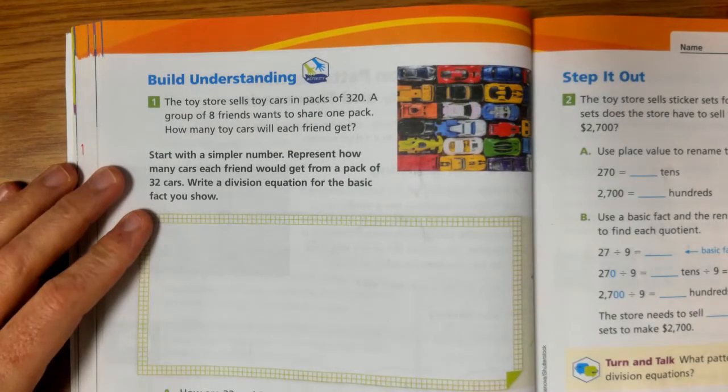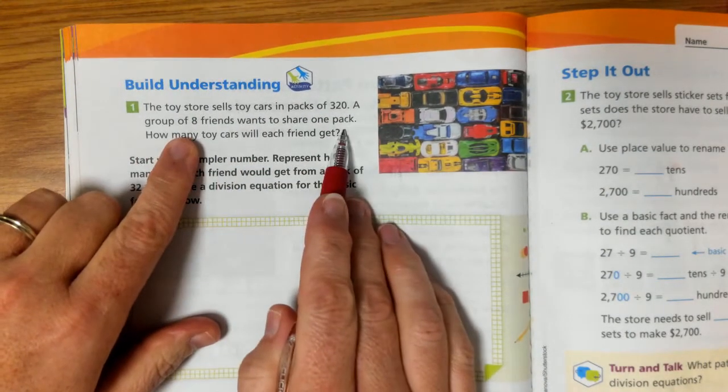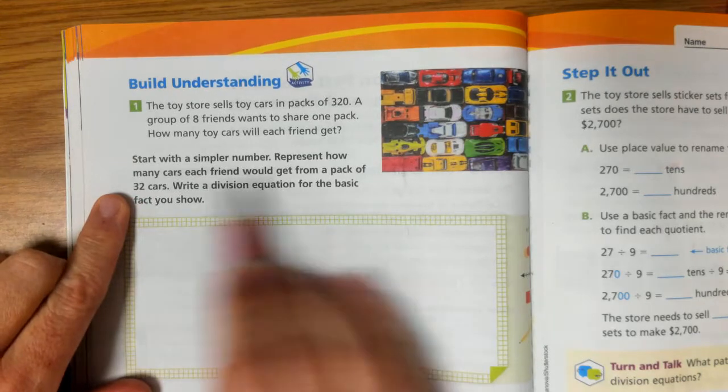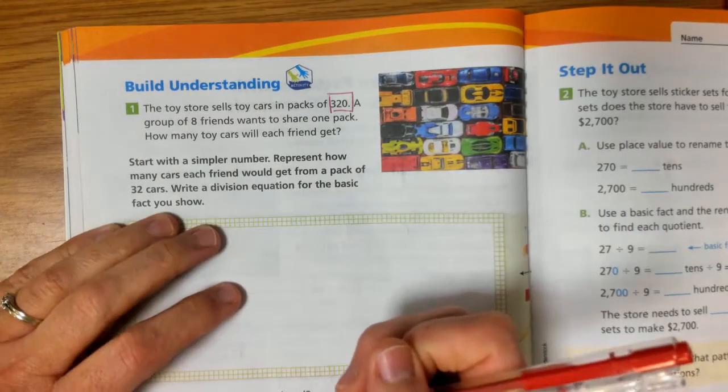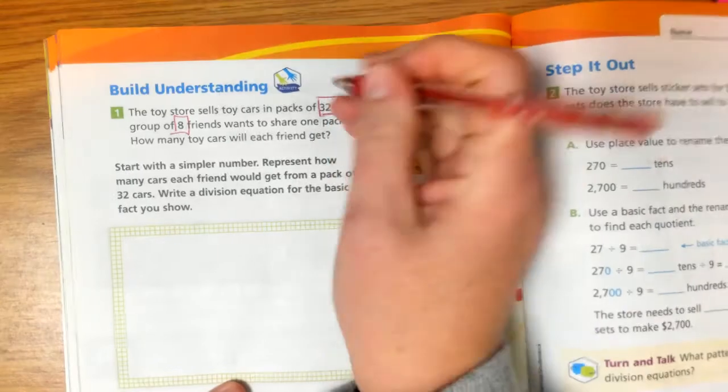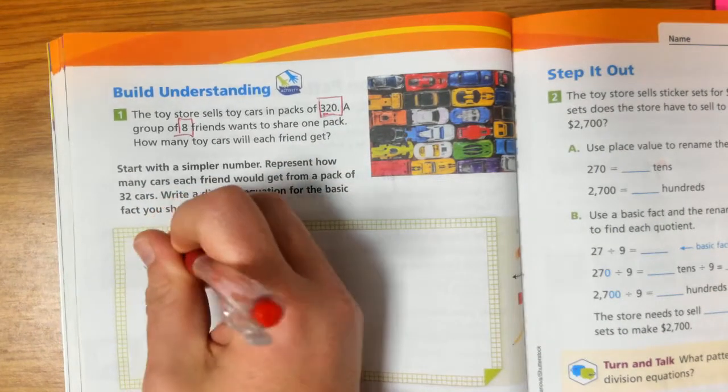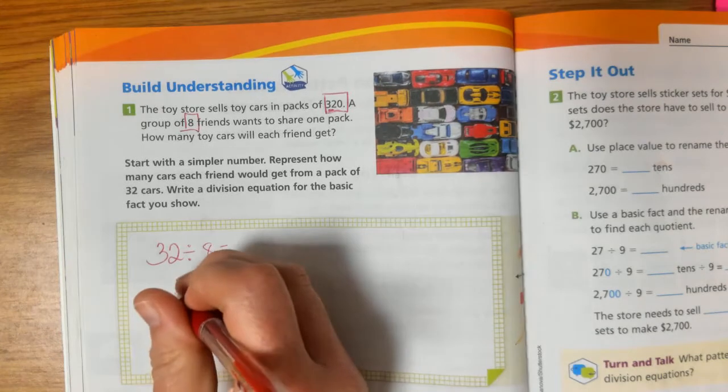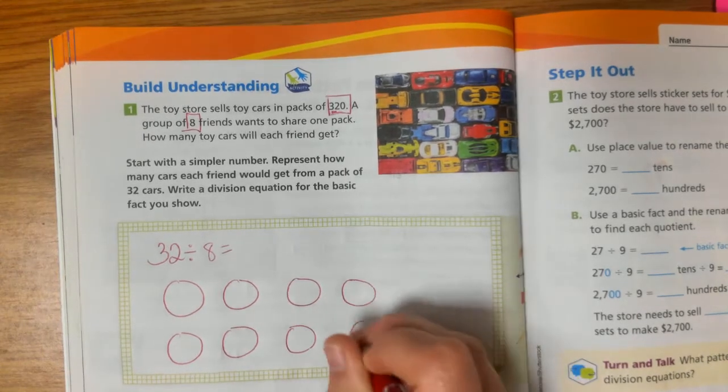So we'll look at the next page. A toy store sells toy cars in packs of 320. A group of eight friends wants to share one pack. How many toy cars will each friend get? Start with a simpler number. Represent how many cars each friend would get from a pack of 32 cars. Write a division equation for the basic fact you know. Well, if I look at this number, 320, and I'm dividing it by 8, right? Because each pack has 320 cars, and eight friends are going to divide them evenly. And I look at this number, and I can see I have a 32 there. I know that 32 and 8 are related. I know that I can divide 32 divided by 8, because I know there's a multiplication factor times 8 that's going to equal 32. So here are my 8 friends.